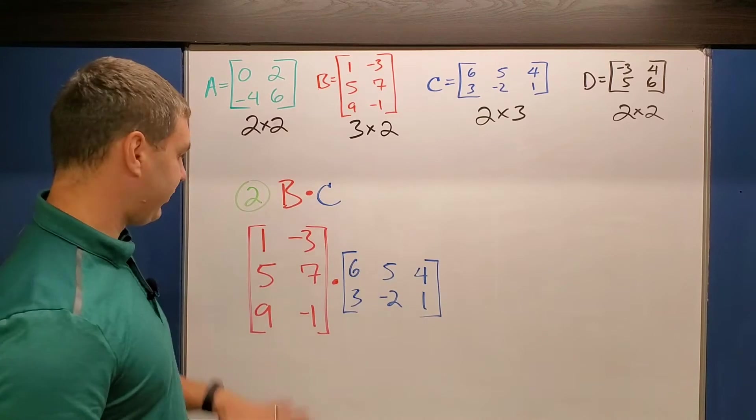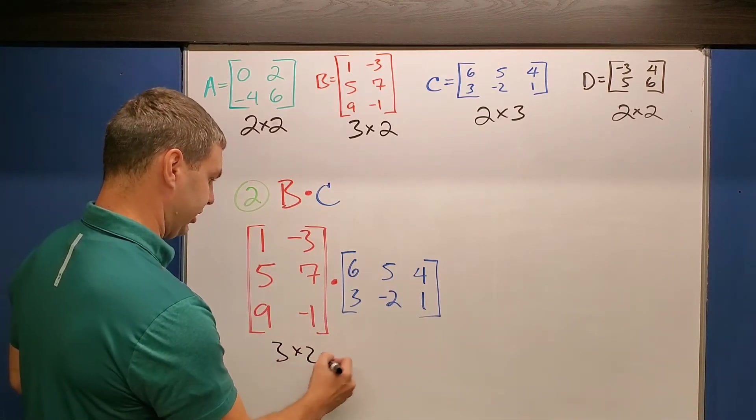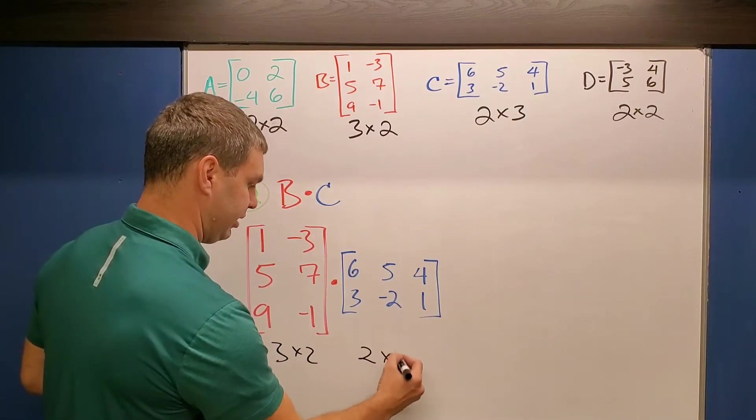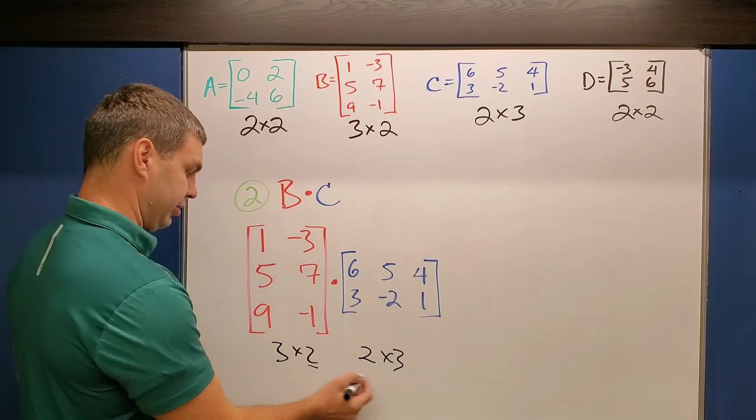All right guys, number two, we have some wonky dimensions. Now this is a 3×2. Remember a 3×2. And this one is a 2×3 for B times C.